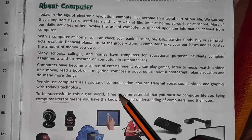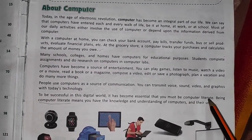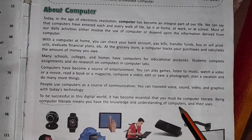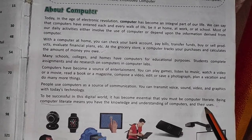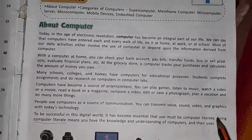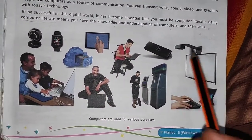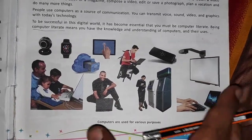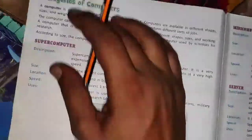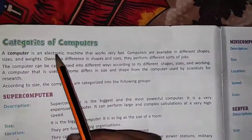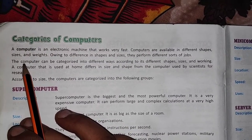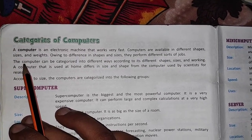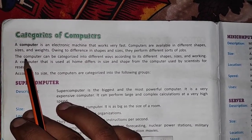Since computers are used by every person in every sphere of life, it is very essential that we must be computer literate. Computer literate means you have the knowledge and understanding of computers, their uses, and where computers are used. In this diagram you can see different people using computers for different types of work. Computers are electronic devices that work very fast and come in different sizes, shapes, and weights, and accordingly they do different jobs.